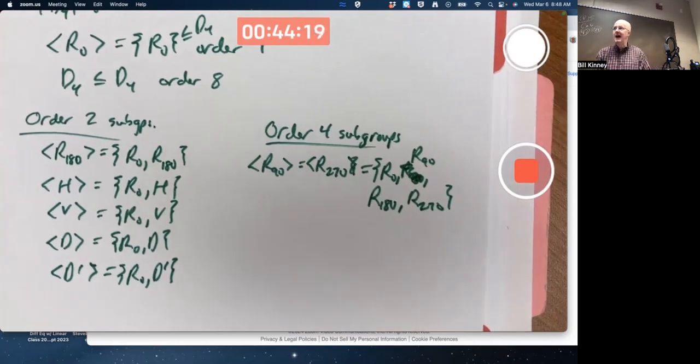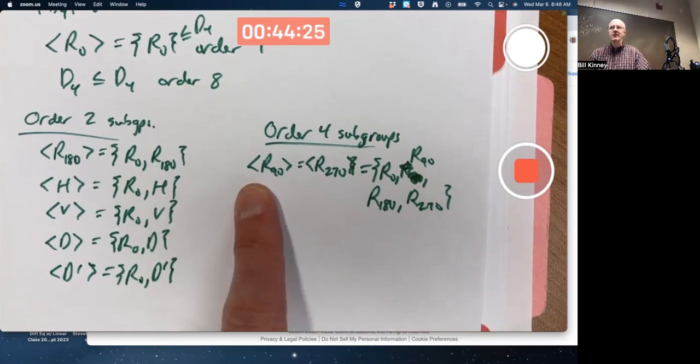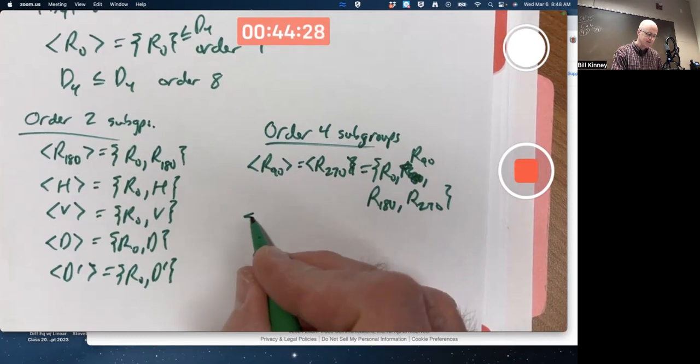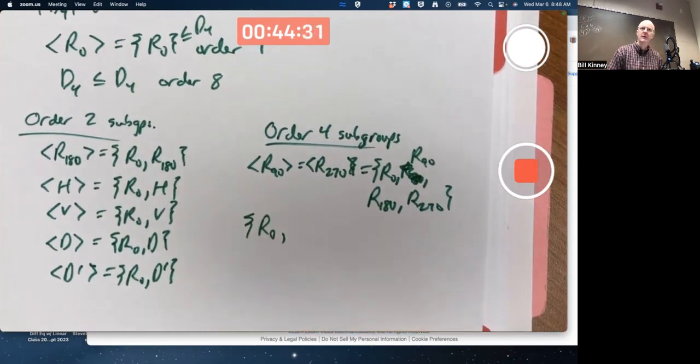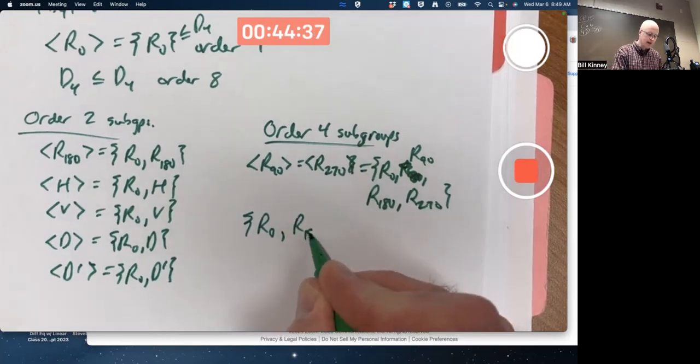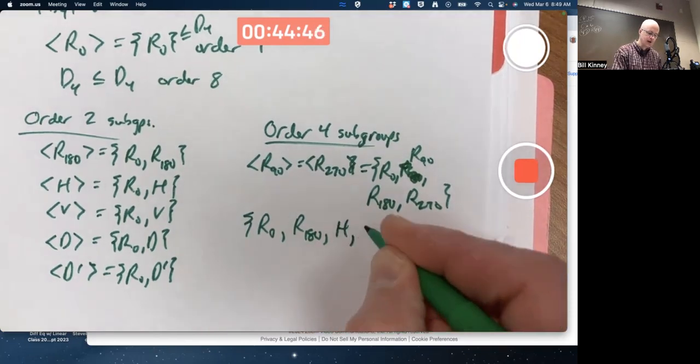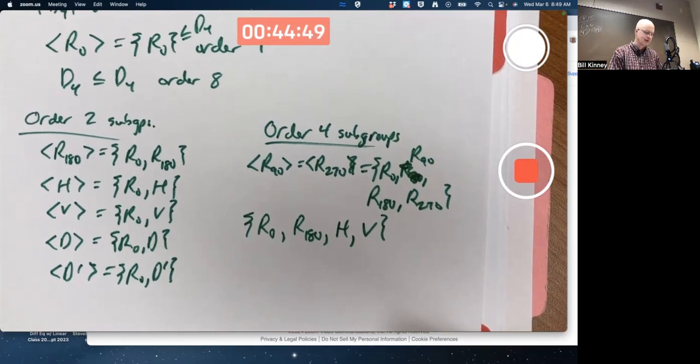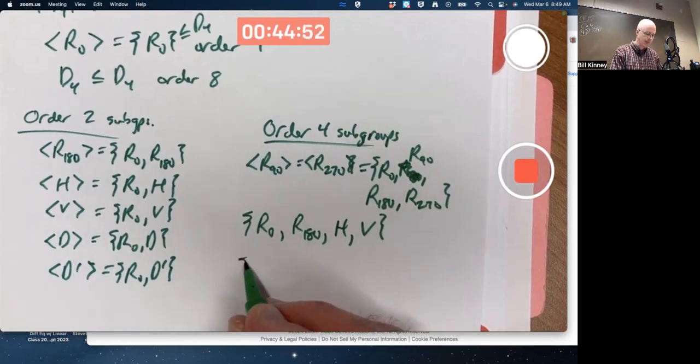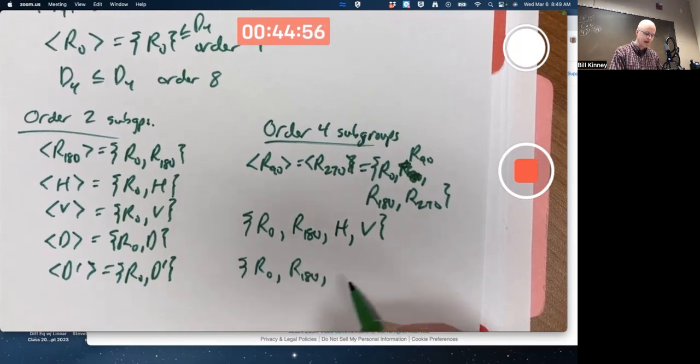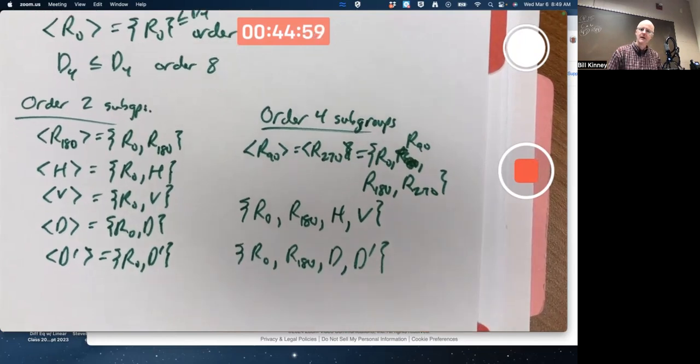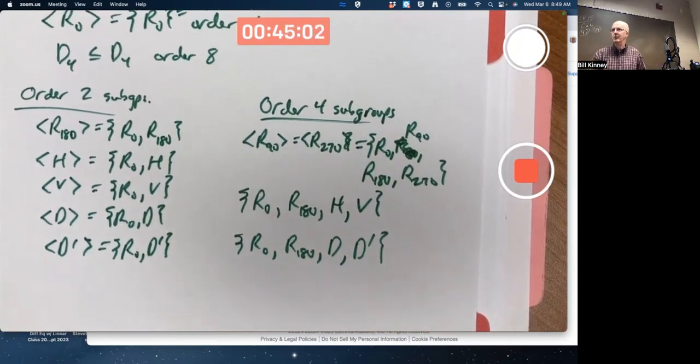But then there are also some non-cyclic subgroups of order 4 that are not isomorphic to this one. You can't write them with a generator. We talked about this. You have to include R0 along with three elements of order 2 that all commute. R180 has got to be in there, and then you've got some choices for the other two. If you include H, you also have to include V, it turns out we saw, but not D or D prime. If you do R0 and R180 and include D, you also have to include D prime. And we saw that there are no others. We did talk about this a couple weeks ago.